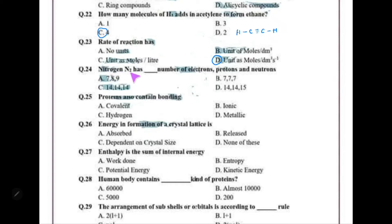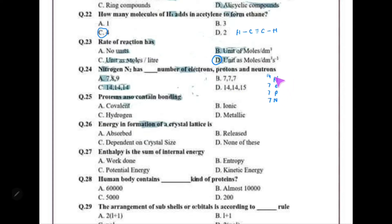N₂ has how many electrons, protons, and neutrons? Nitrogen has atomic number 7 and mass number 14, so it has 7 electrons, 7 protons, and 7 neutrons. For N₂, all values are doubled. So the answer is choice C.